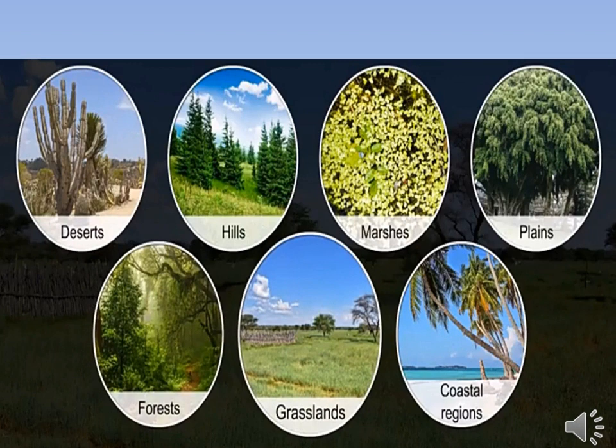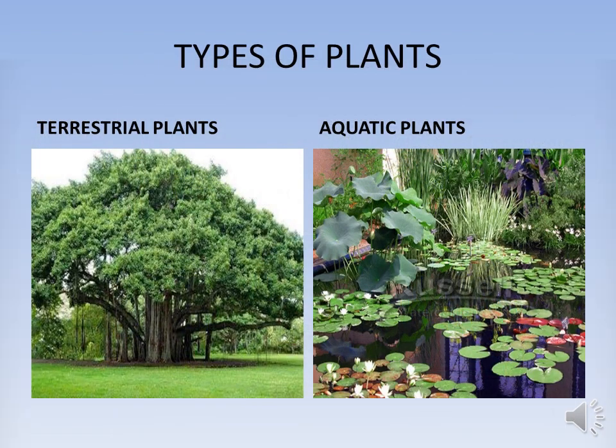A plant adapts itself according to the climatic condition of its habitat, the temperature of the place, amount of rainfall and sunshine it receives, and how much water is available. Children, plants are divided into two types: terrestrial plants and aquatic plants.